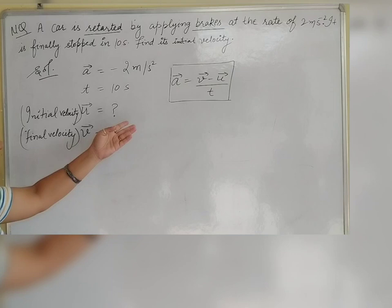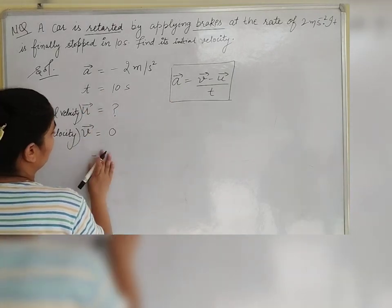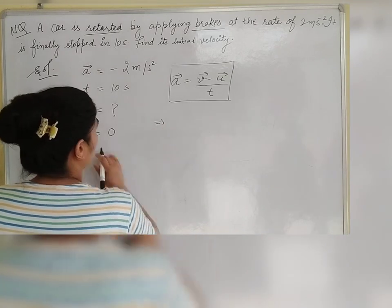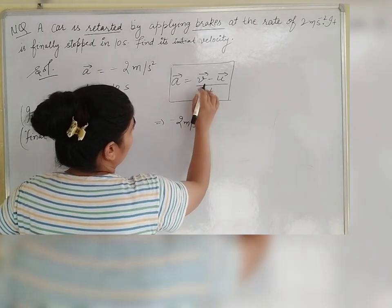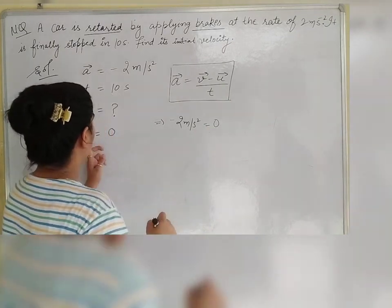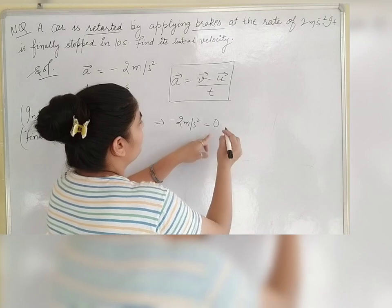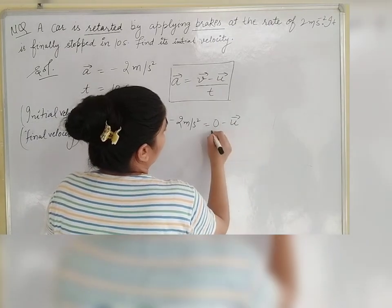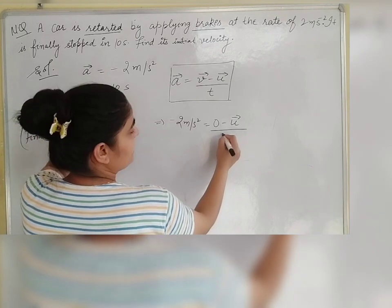Let's take a look at the formula and put the values. Acceleration is minus 2 meters per second square equals V, which is 0, minus U, divided by time taken, which is 10 seconds.